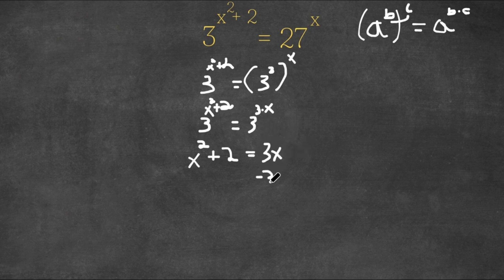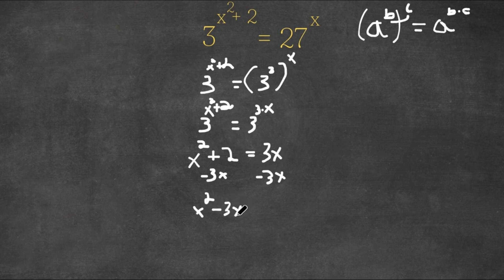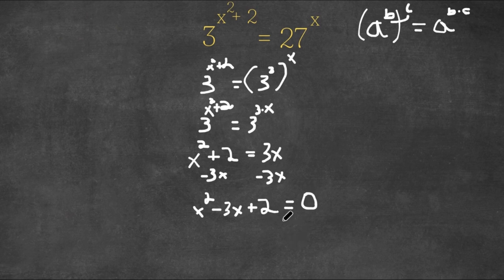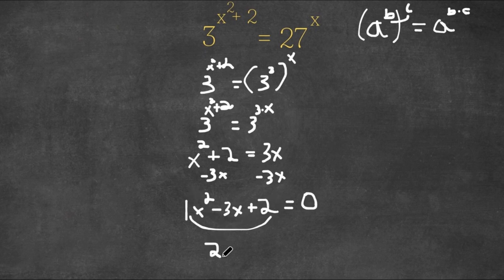Now I'm going to subtract 3x on both sides, so now we have x squared minus 3x plus 2 equals 0. So now what we're going to do is factor this equation. We're going to multiply a and c, where a is 1, so 1 times c is 2. Our product p is 2 and our sum is negative 3.